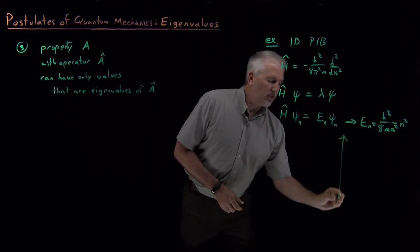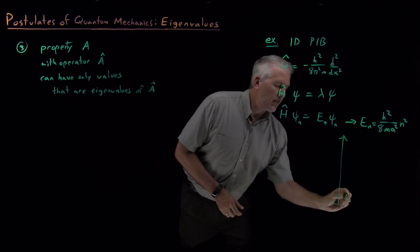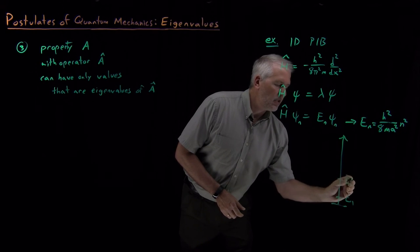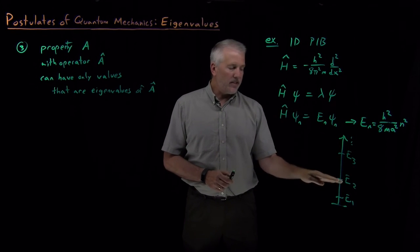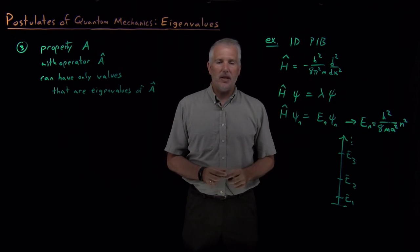So with the energy ladders that we've drawn a few times, I can have this energy, E1, or this energy, E2, or this energy, E3, and so on, but I can only have these specific discrete quantized energy levels.